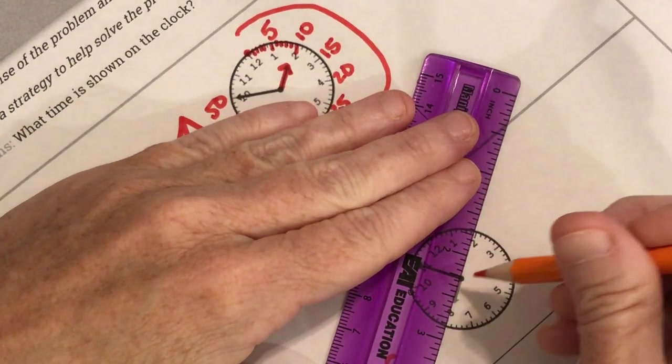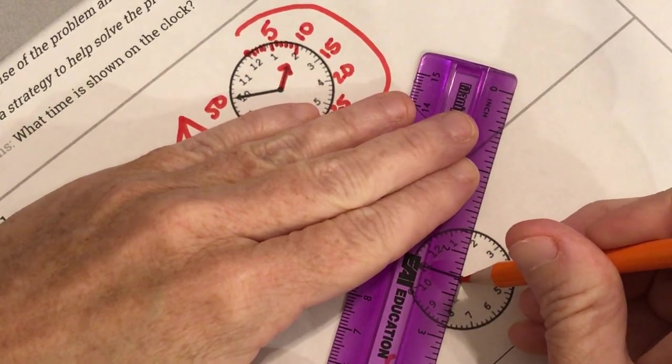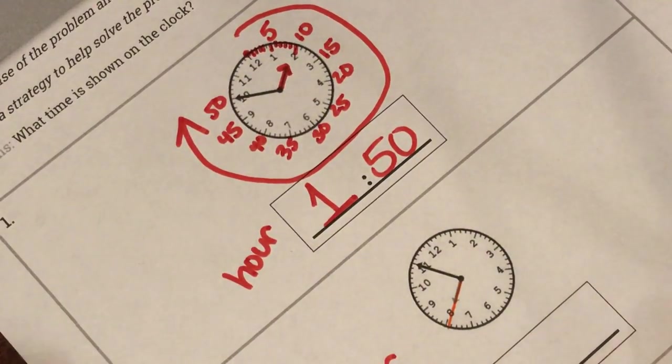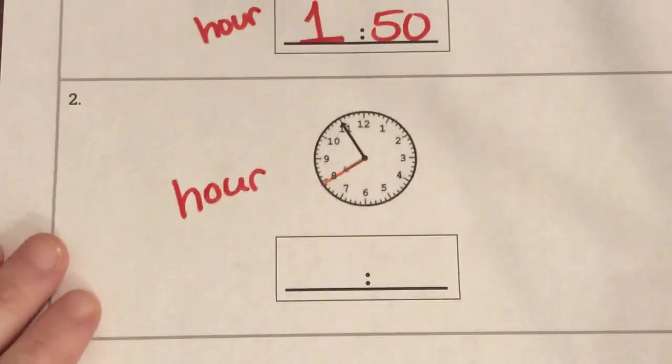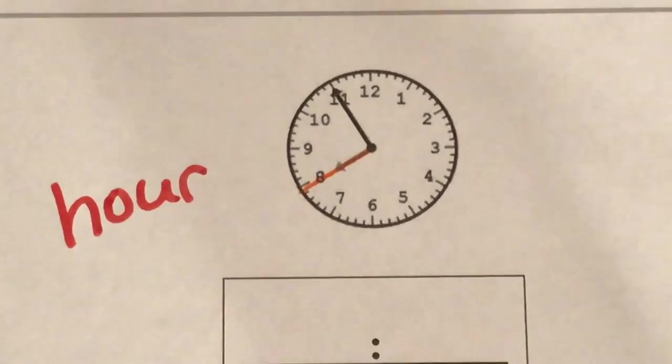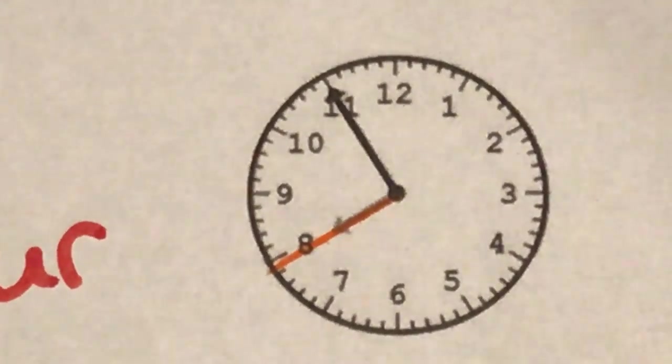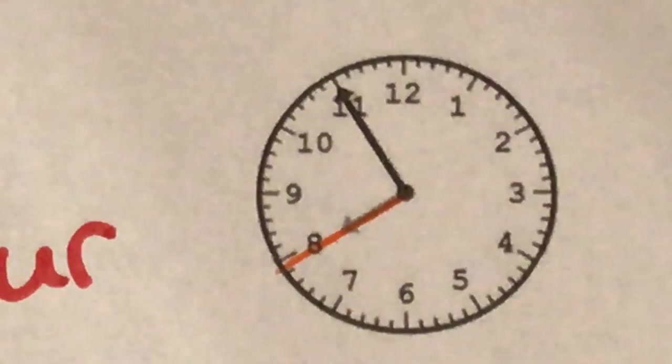If I trace this and I'm gonna trace it in a pencil so it's a little sharper. If I trace that I want you to look really closely at that boys and girls because this is a tricky one. Look really closely. It is almost pointing to the eight. Almost.